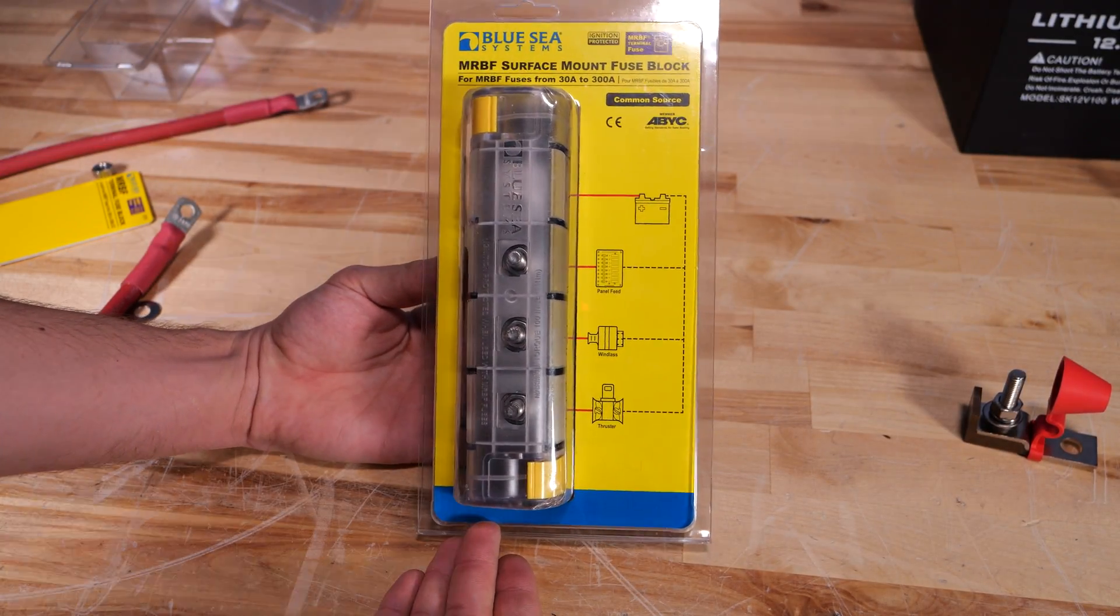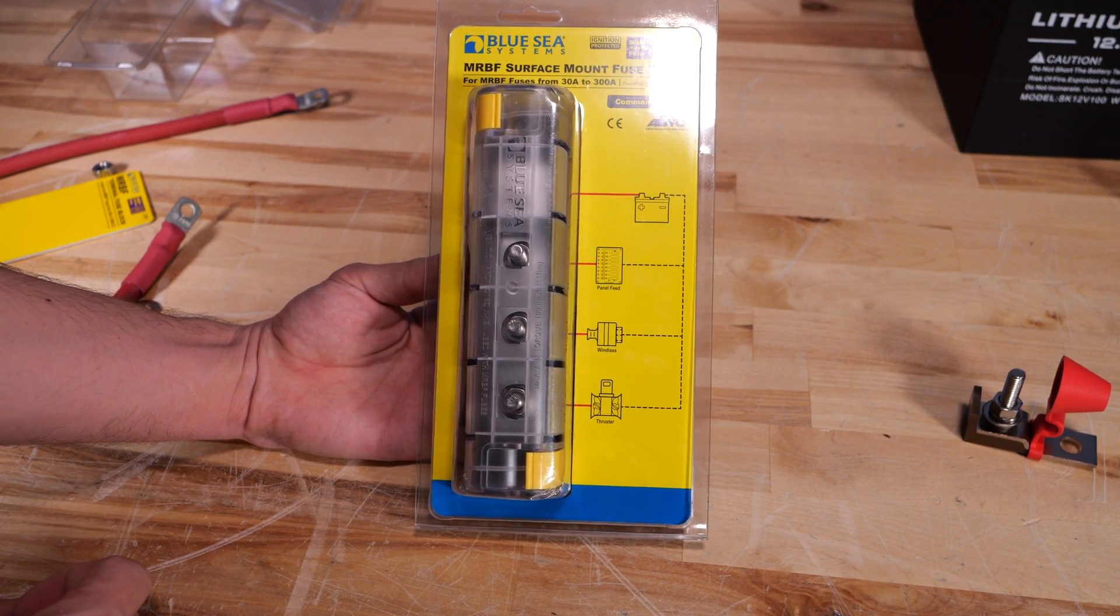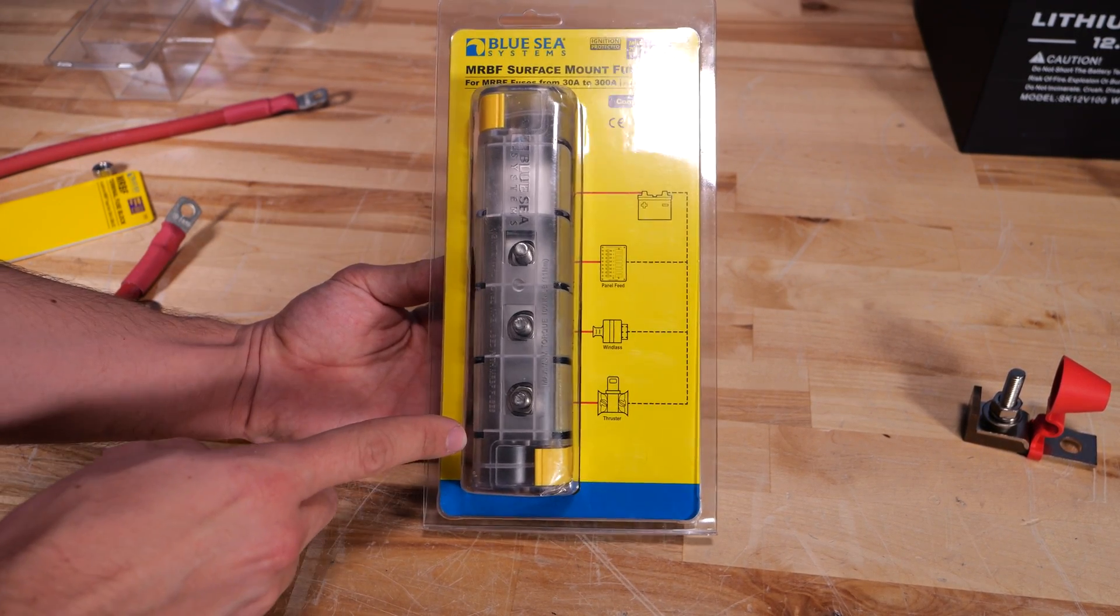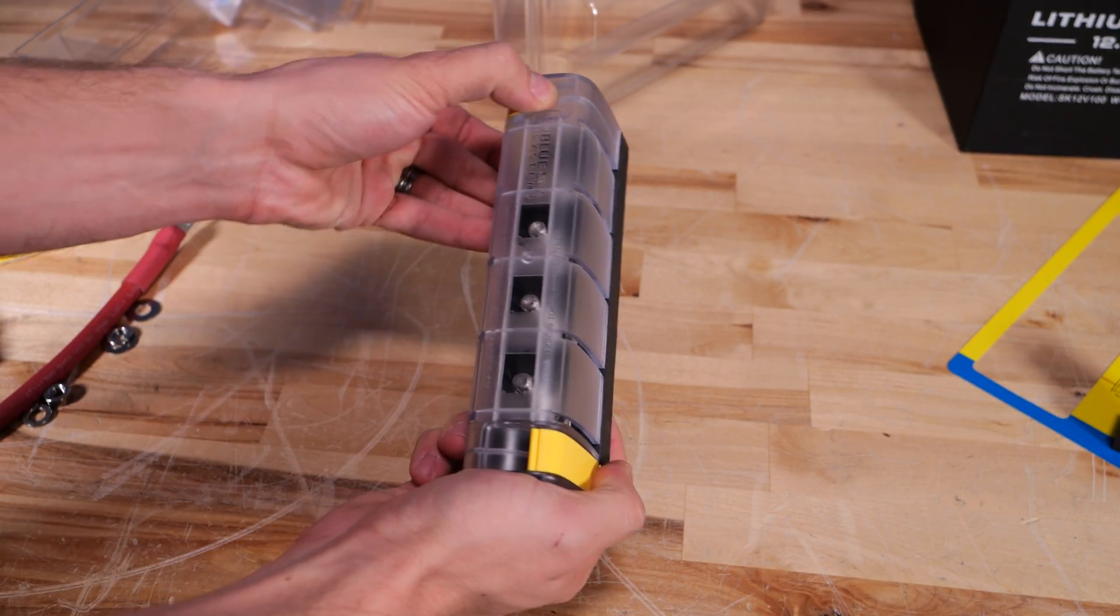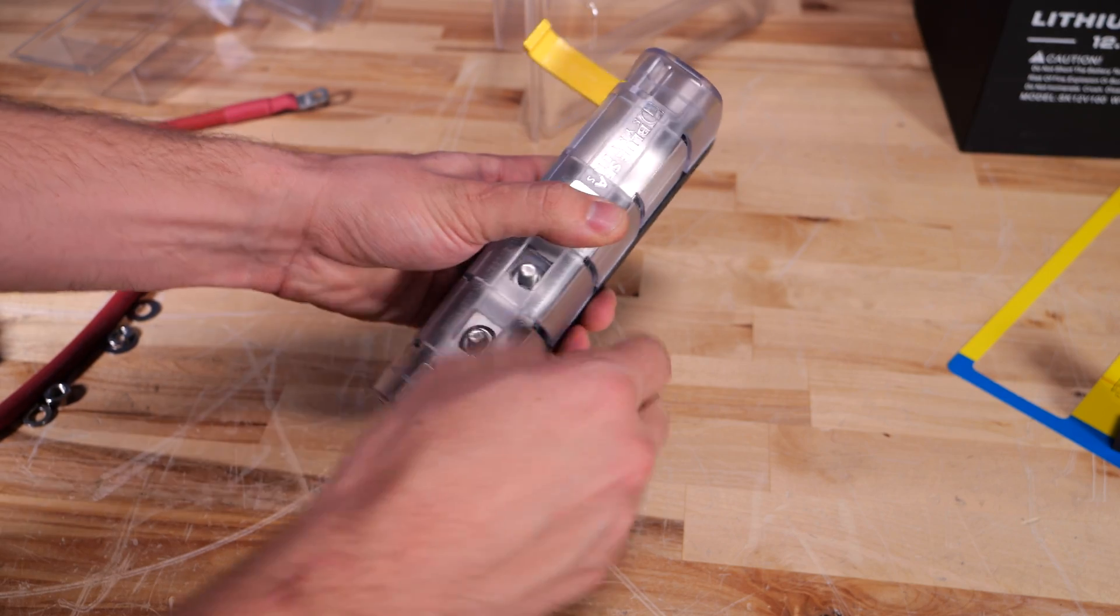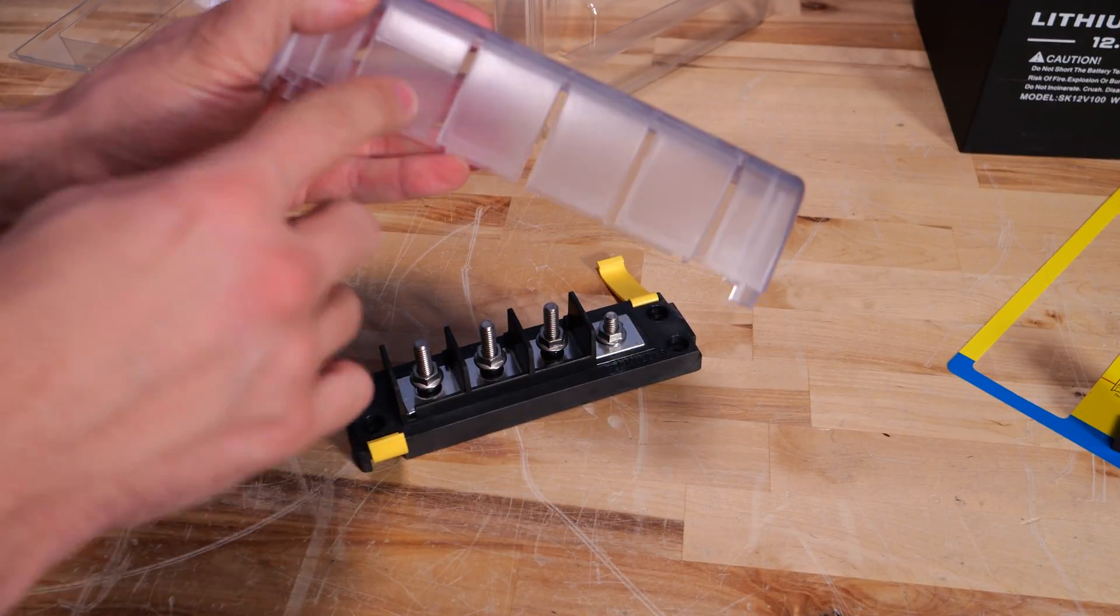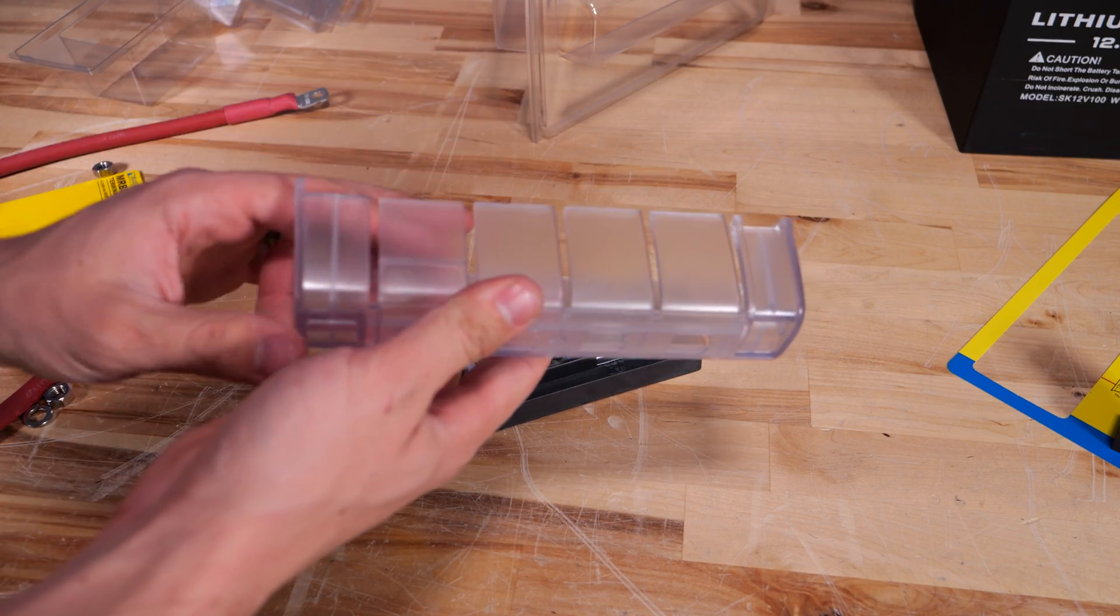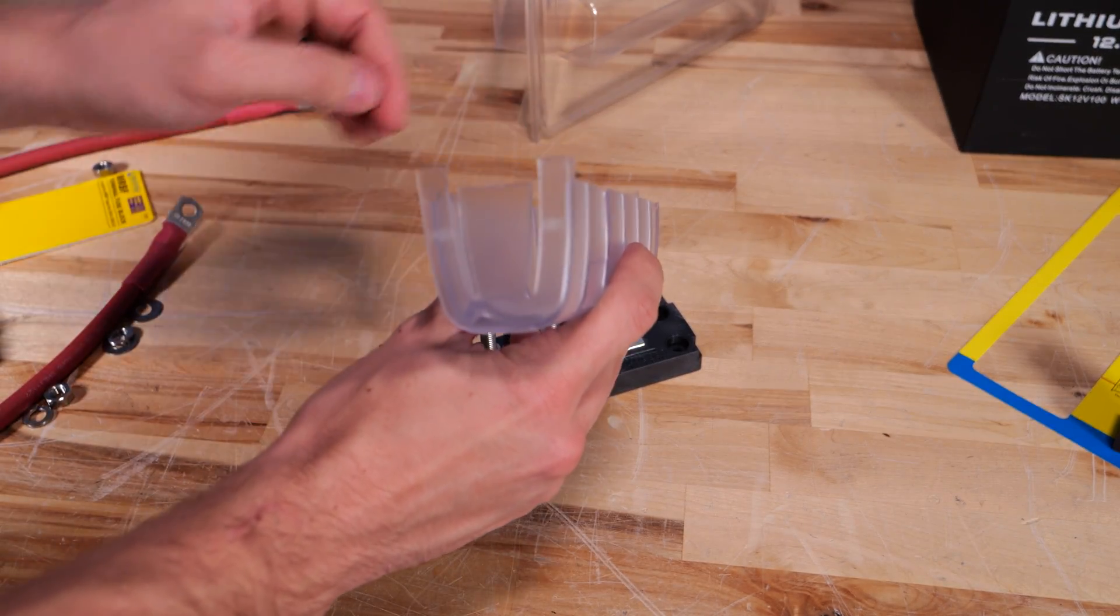Moving on to a whole new category of product, this is the model 5196, this is a common source bus bar and fuse holder combination. Now this has a very nice polycarbonate cover to meet ABYC requirements, two snaps pop it off and these side areas here can be snapped off either on the top or the bottom depending on where you need your cables to enter and exit as well as the side.